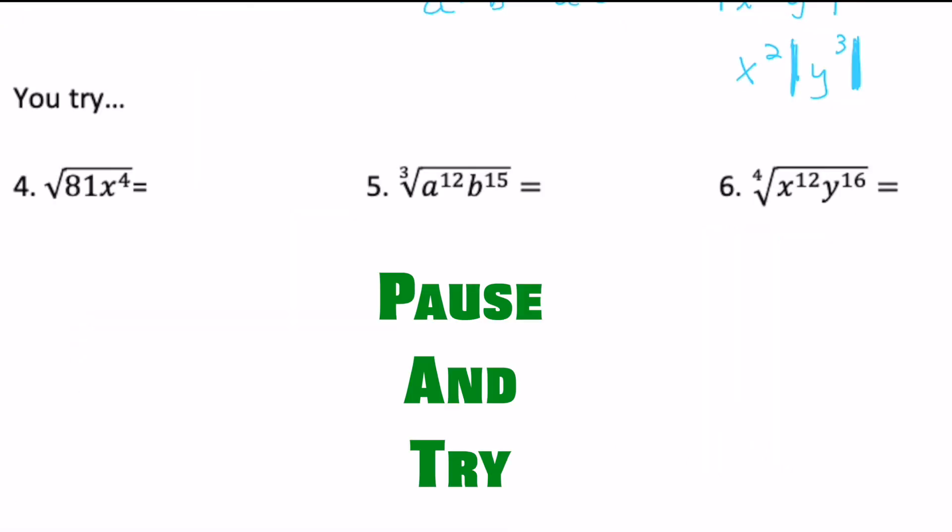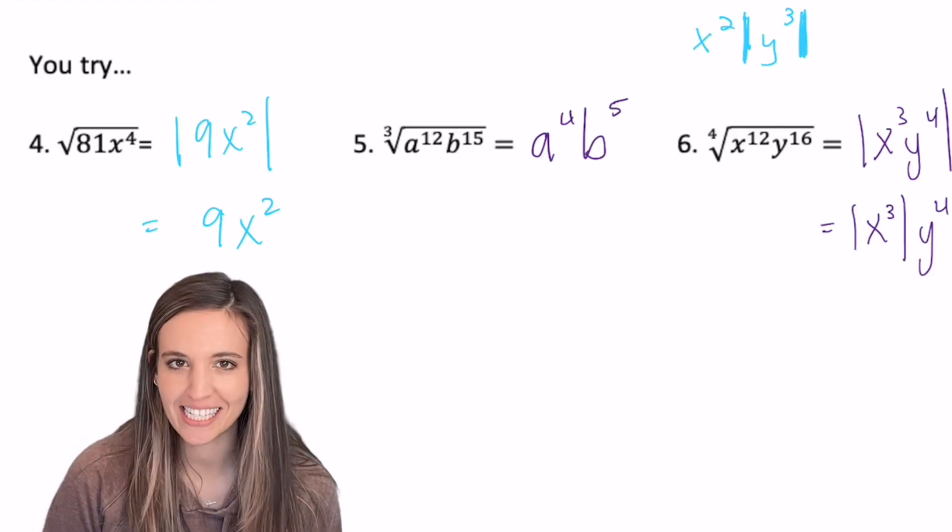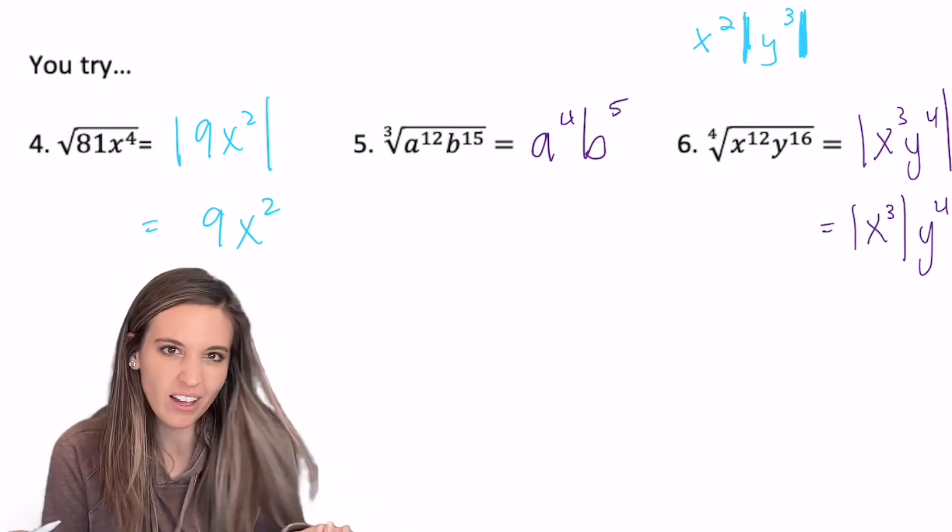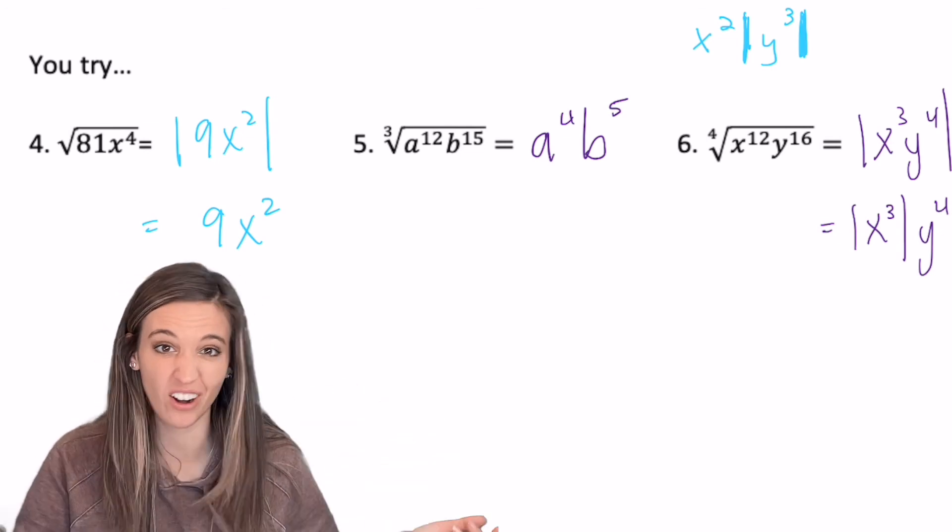Now you try. Let's check and see how you did. On four, you should get nine x squared. Now I didn't need those absolute value bars because nine's positive, x squared's guaranteed to be positive.